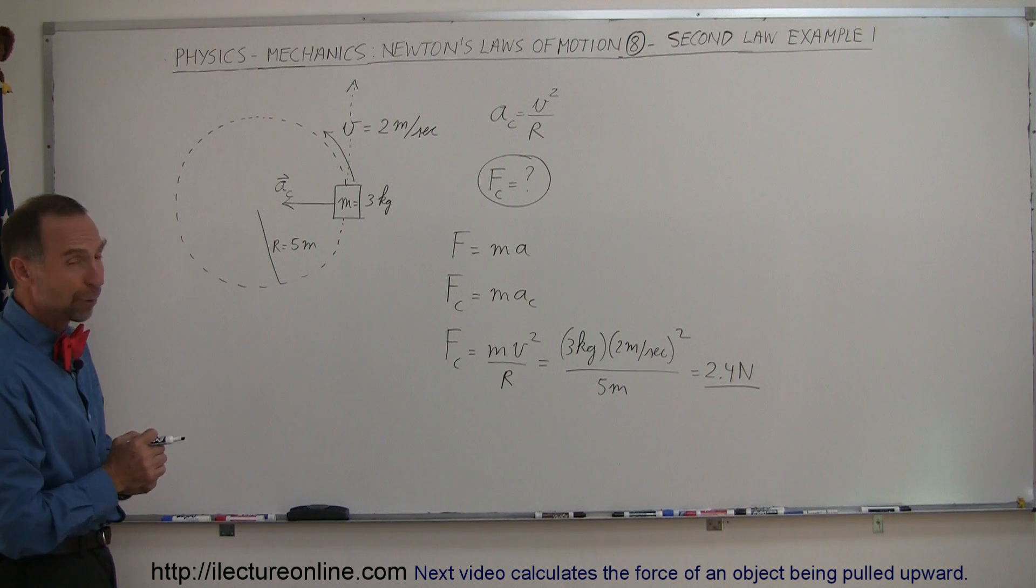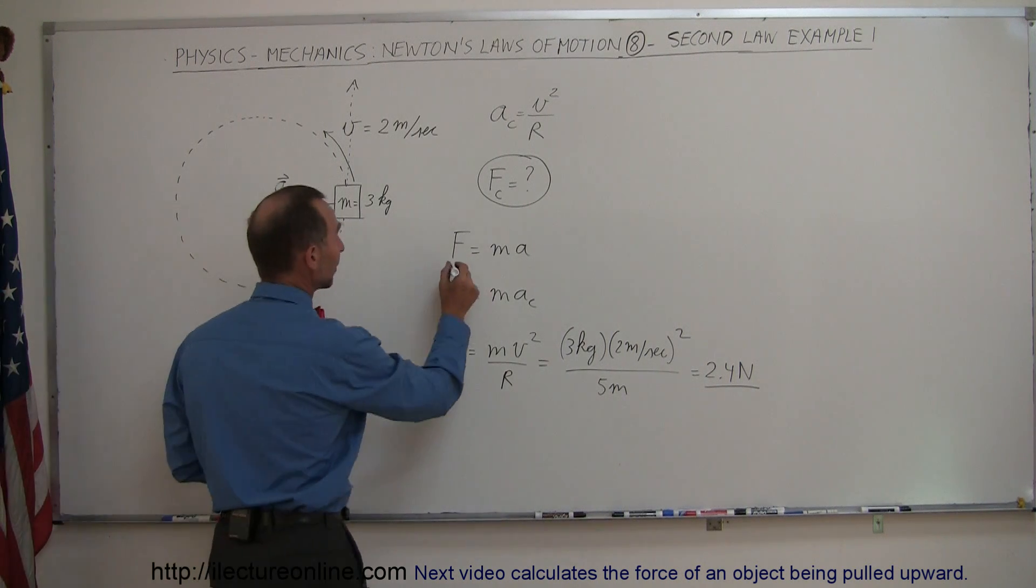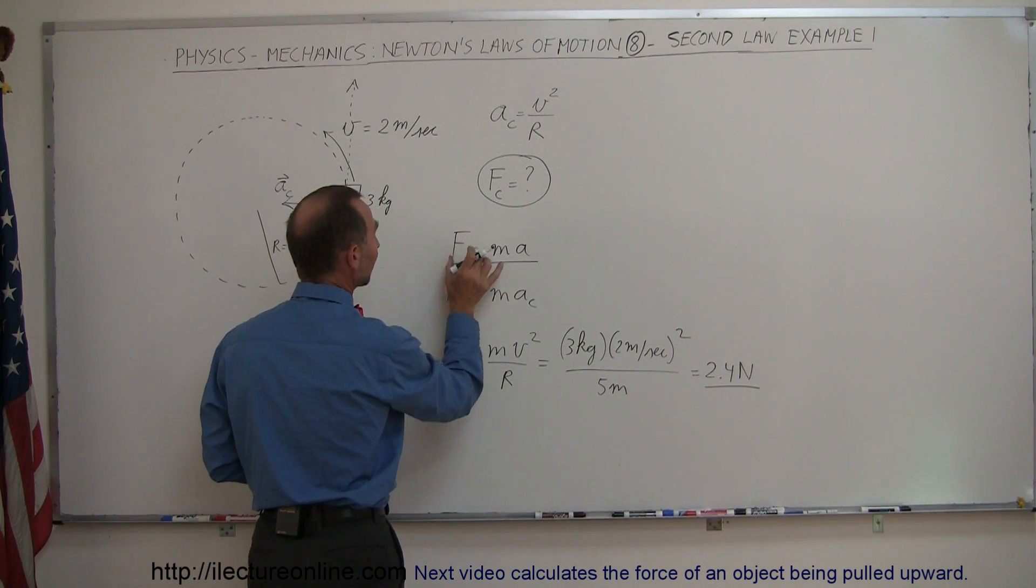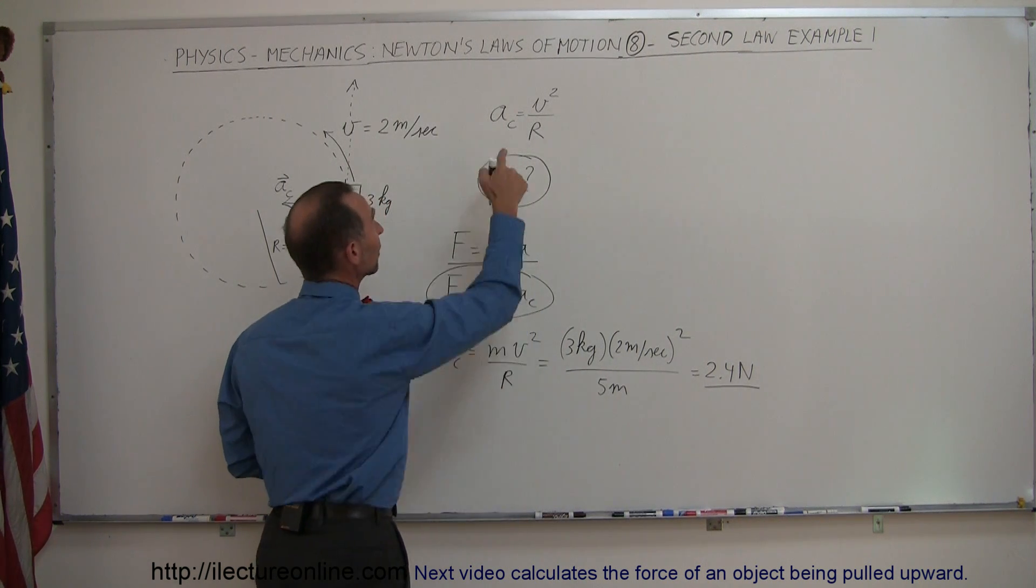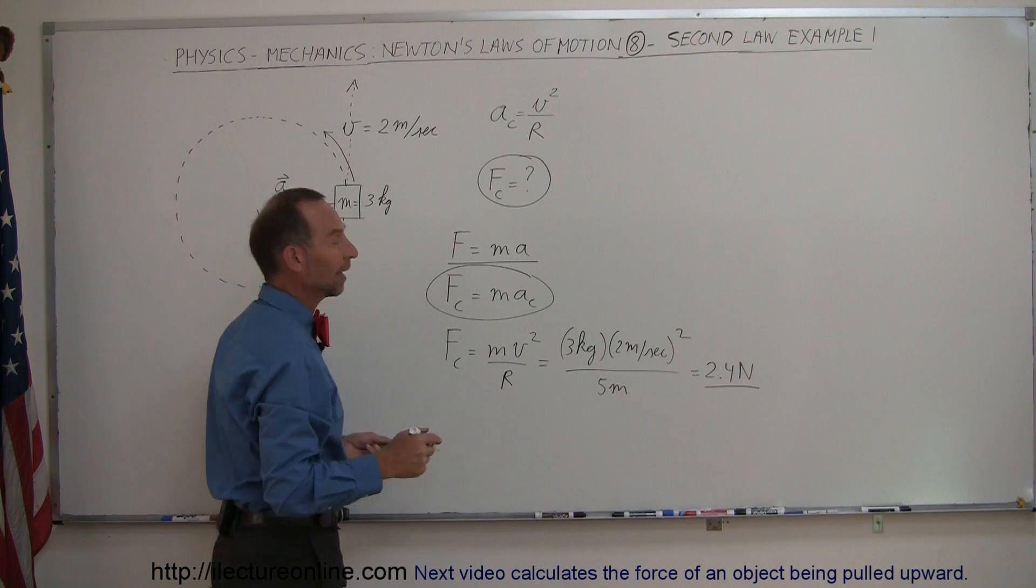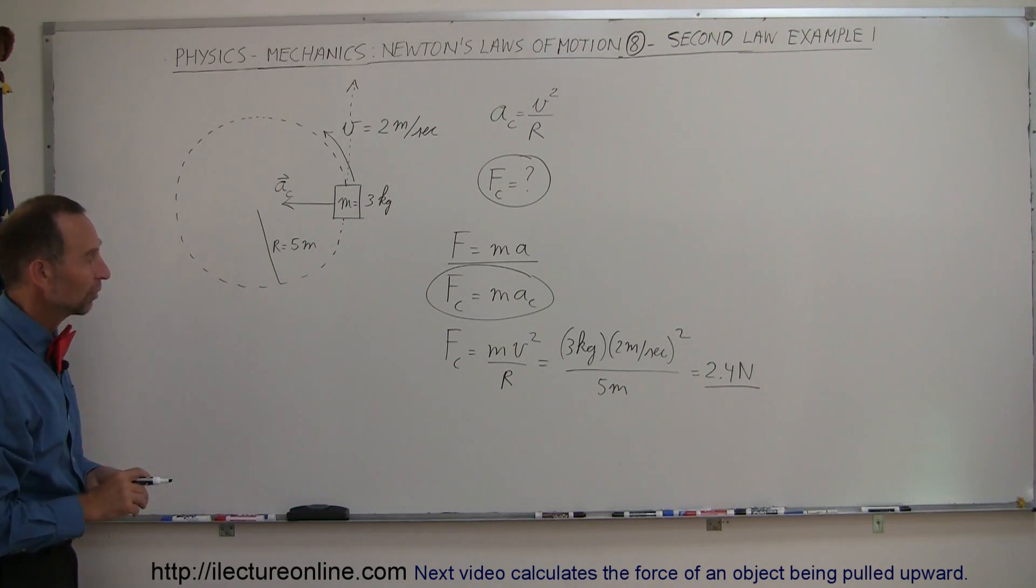So, that's pretty straightforward. Again, the definition here is f equals ma, and it doesn't matter what the f or the a is. If it's centripetal, we use the very same equation, and then the equivalent for the centripetal acceleration, to fill out the equation f equals ma, known as Newton's second law. And that's how you do that.